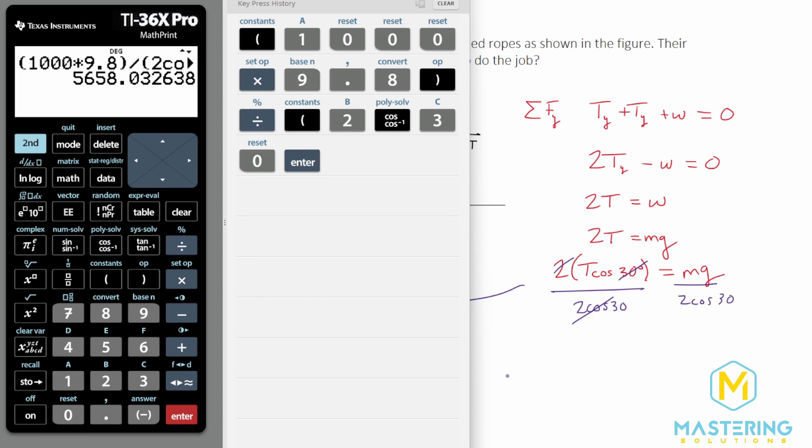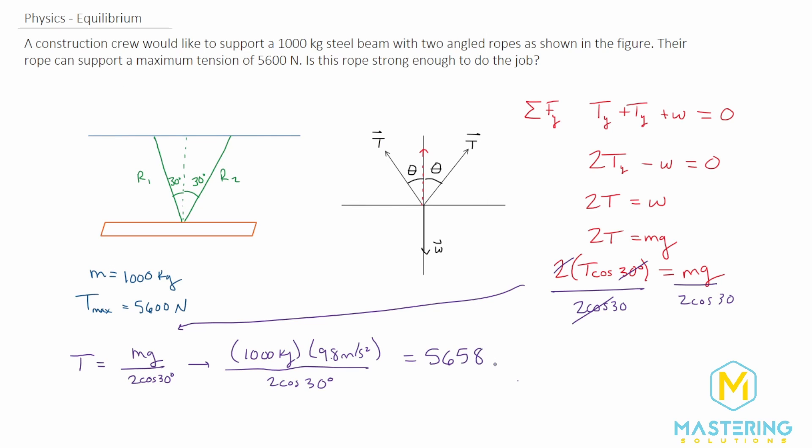So for the total tension for the ropes is 5658, so we could say 5658 newtons is the tension. But the maximum tension that it can have is 5600, so we're over the maximum tension that these ropes can handle, so the rope will break.